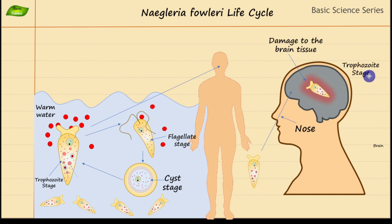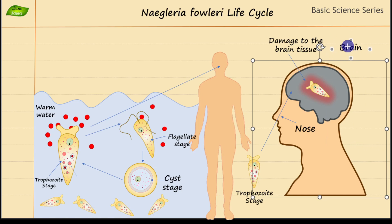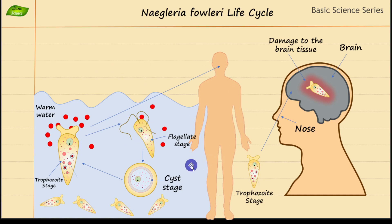The trophozoite form is the infective form, and here is the brain that gets infected with the amoeba, causing a lot of damage and complications as we've discussed. I think we've covered everything and designed this illustration from scratch. We've discussed every aspect of Naegleria fowleri's life cycle. You can also visit the CDC website for more information. I hope this video helped you understand the infection and life cycle of Naegleria fowleri — please stay tuned, watch all the videos, and subscribe to the channel. Thank you so much.